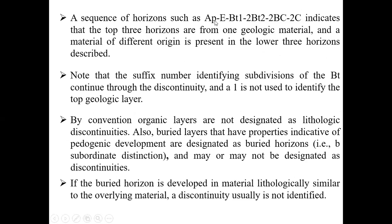For example, if you dig a profile and find a sequence Ap, E, Bt1, and then see '2' before Bt2 and 2Bcc, this indicates that the top three horizons are formed by one geological material. The lower horizons are formed by different materials, indicated with lowercase letters and numbers. The suffix number identifies subdivisions of the Bt throughout the discontinuity, and '1' is not used to identify the top geological order.